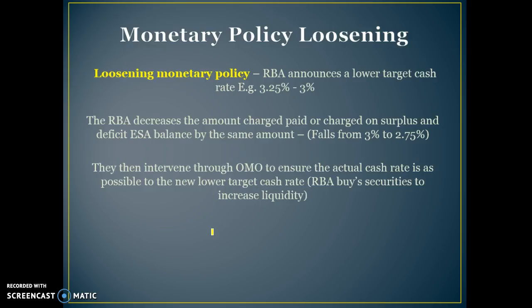A loosening of monetary policy is basically when the RBA announces a lower target cash rate. For example, if they lower the target cash rate from 3.25% to 3%, the RBA decreases the amount charged or paid on surpluses and deficits in exchange settlement accounts by the same amount.